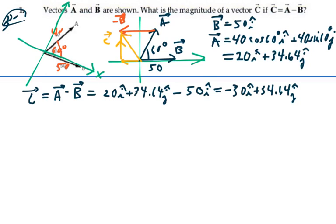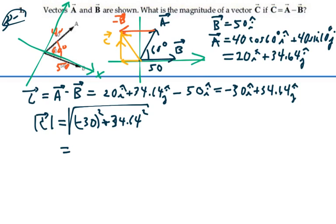The magnitude of this vector is going to be the square root of its components. Negative 30 squared plus 34.64 squared. And that's going to be equal to 45.8.